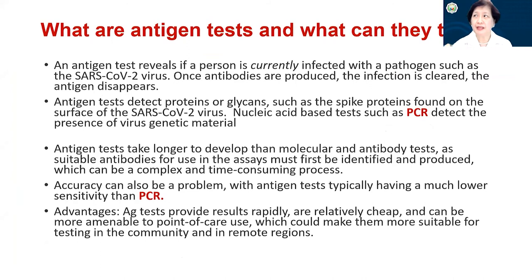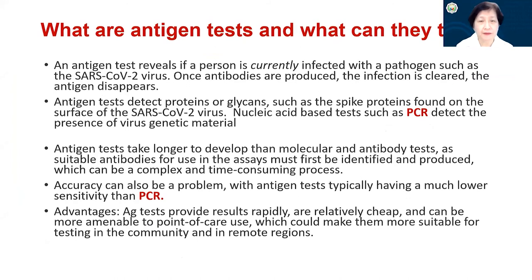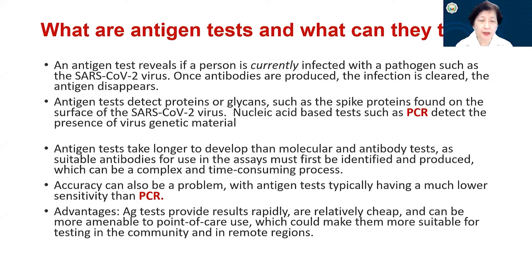The antibody test became available earlier — about two to three months before the antigen test, which became available in early May 2020 in the United States. An antigen test reveals if a person is currently infected with a pathogen such as SARS-CoV-2. Once antibodies are produced and the infection is cleared, the antigen disappears and will not be detected anymore — so there is a time frame for doing the antigen test. It may detect proteins or glycans such as the spike proteins found on the surface of SARS-CoV-2.